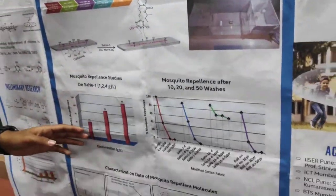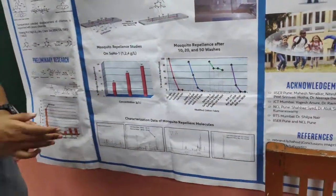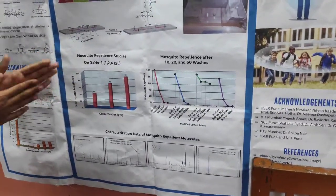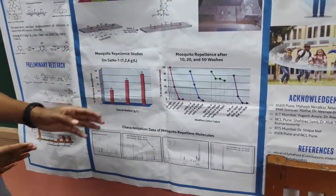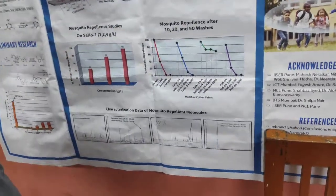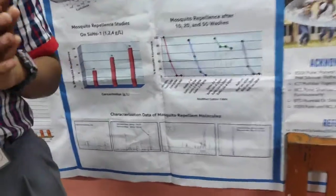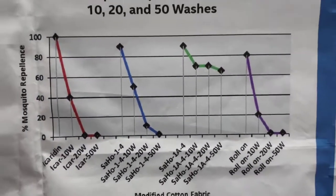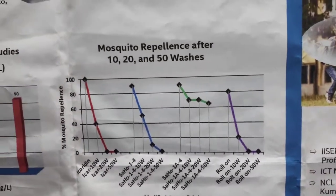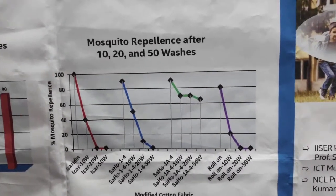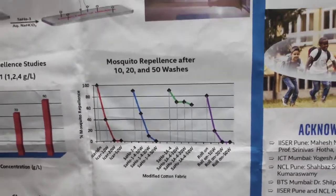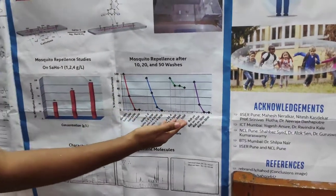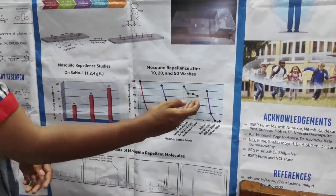At different concentrations — 1, 2, and 4 grams per liter — at 4 grams per liter concentration, SAHO-1 showed 90% repellence. To check permanency, a wash-to-wash analysis was done. The cloth was washed for 10, 20, and 50 washes, and SAHO-1 retained 60% repellence remaining.